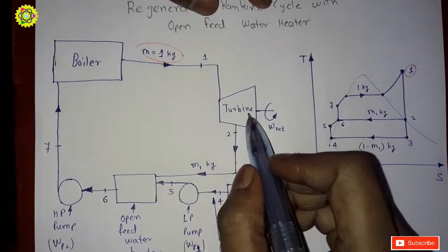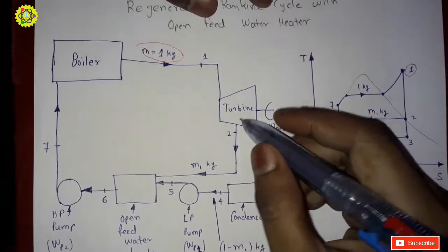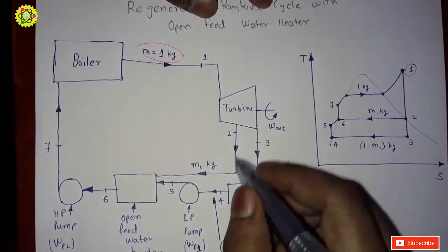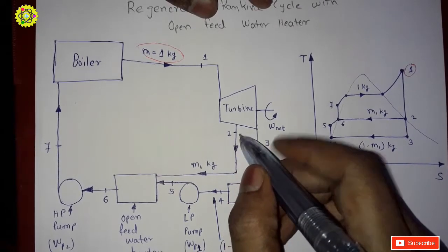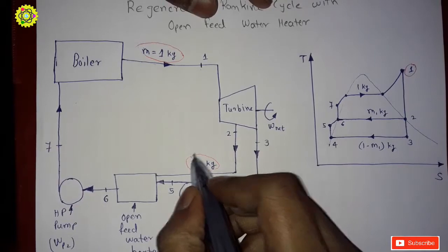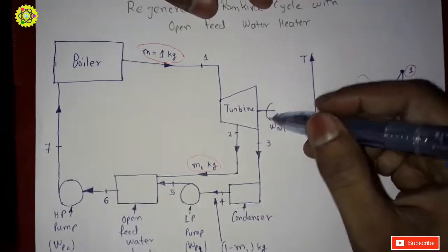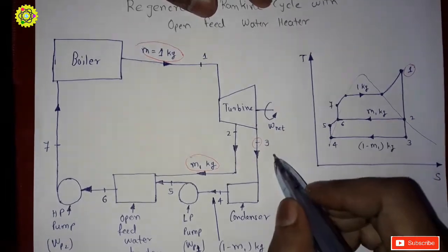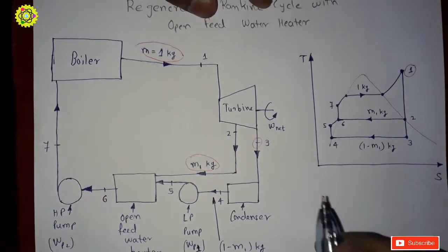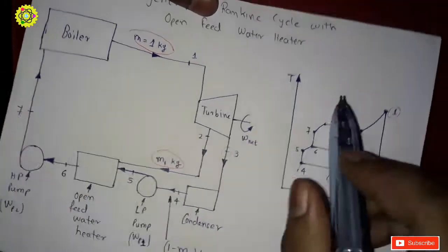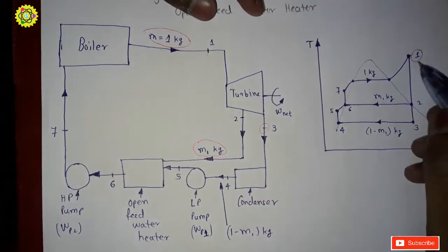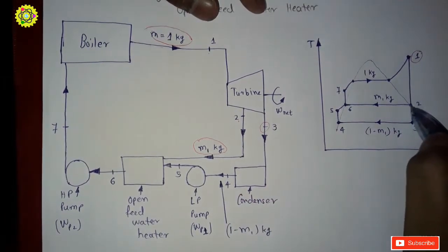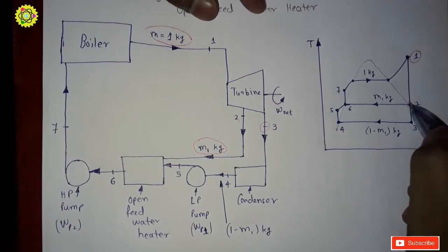The steam expands in the turbine. At State 2, some of the expanded steam is extracted from the turbine — suppose it has a mass of m1 kg — and the remaining steam is expanded fully to State 3, that is up to the condenser pressure. In the T-S diagram, State 1 to State 2 represents the extracted steam, and this extracted steam has a mass of m1 kg.